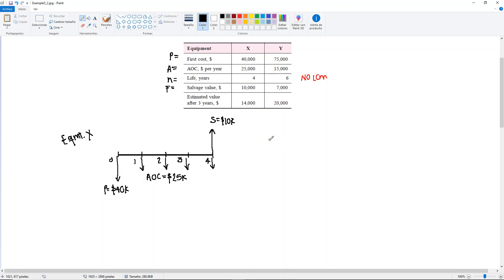Then I have Equipment Y. For this one, I'm going to need six years: 0, 1, 2, 3, 4, 5, 6. Same thing, you have a P going down. This is for $75,000. You have your annuals that are uniform, $15,000. And your salvage value at the end of the sixth year, which is going to be $7,000.